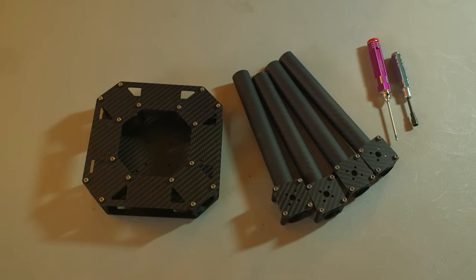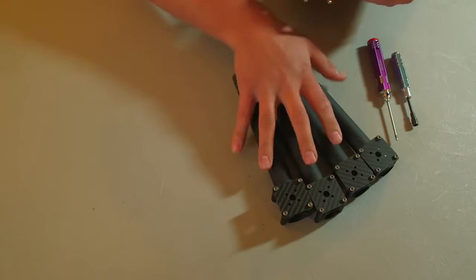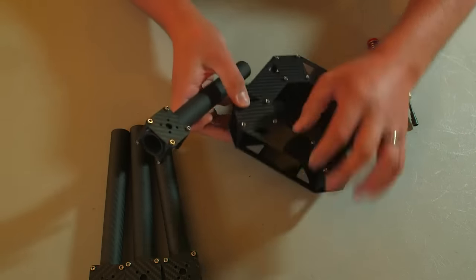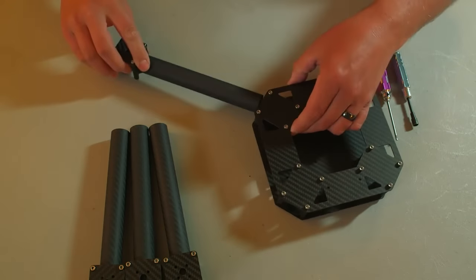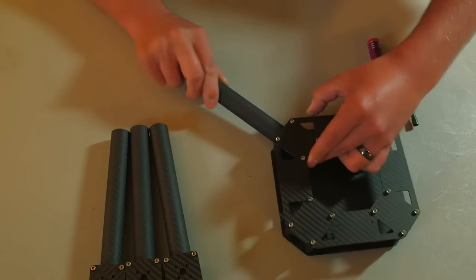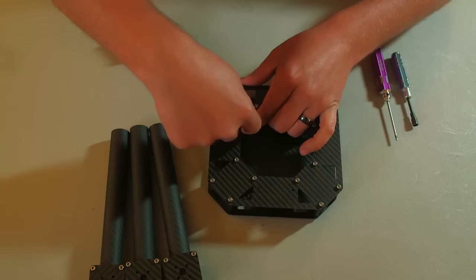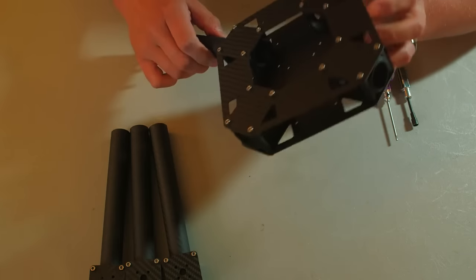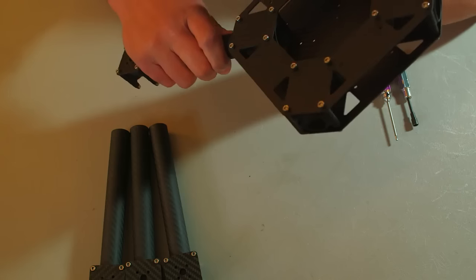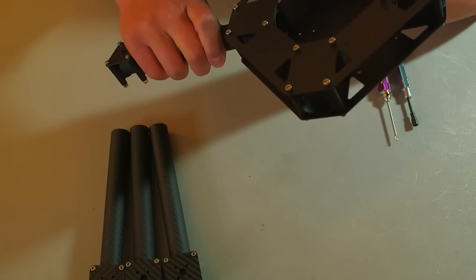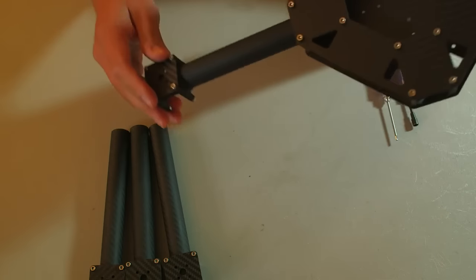To add the booms to the center section it's pretty much the same thing that you would do for the motor mounts. Just push them in and twist until they're flush with the inside of the clamp. We want to make sure that tube is just to the very edge and that it's consistent with each.